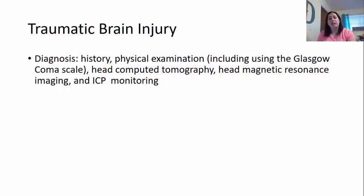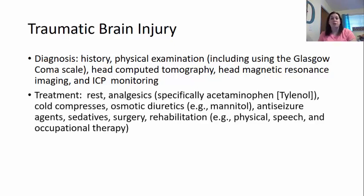A head CT, a head MRI, and monitoring their intracranial pressure — ICP — are also used. Treatment of traumatic brain injuries could be rest, analgesics like acetaminophen such as Tylenol, cold compresses, osmotic diuretics to help keep extra fluid off the swelling in the brain area, anti-seizure agents, sedatives, surgery, and rehabilitation like physical, speech, or occupational therapy — depending on how much of the brain has been damaged.